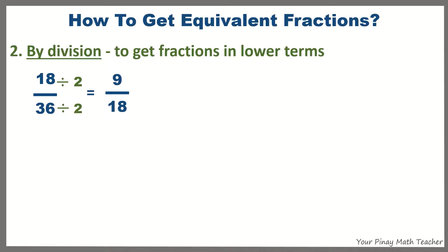9 eighteenths is equivalent to 18 over 36 in lower terms. So, 18 over 36 can also be divided both by 3. 18 divided by 3, 6. 36 divided by 3 is 12. 18 and 36 can also be divided by 6. So, the answer or the equivalent fraction is 3 sixths.